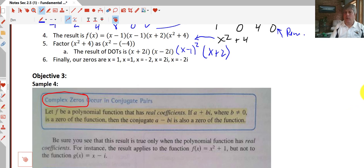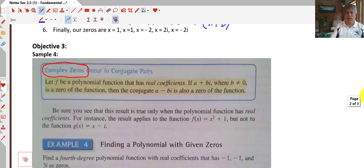One thing you may have noticed from the samples here is that when we have complex zeros or when we have imaginary roots, they always end up in conjugate pairs. We always end up with two of them. That's an interesting bit of information.